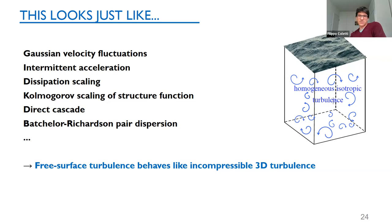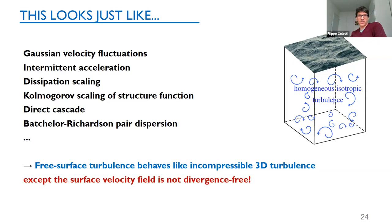Great — except this is impossible, or at least not 100% right, because the free surface velocity field is not divergence-free and it's a 2D surface, not 3D. The velocity field on the free surface is compressible: every time there is an upwelling from underneath, there is a positive divergence at the surface; every time there is a downwelling, there is a convergence — a sink — at the surface. This compressibility leads to clustering.